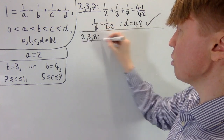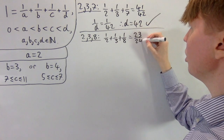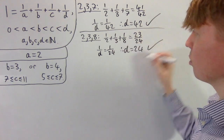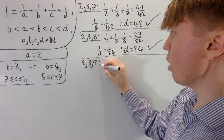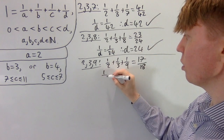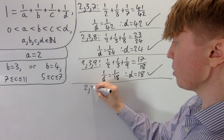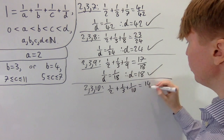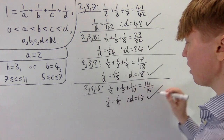Let's try (2, 3, 8). One half plus one third plus one eighth equals 23 over 24. So one over d needs to equal one over 24, giving d equals 24 — this works. Now let's try (2, 3, 9). One half plus one third plus one ninth equals 17 over 18. So one over d equals one over 18... wait, one over d is the remaining one fifteenth, giving d equals 15. So (2, 3, 9, 15) also works.